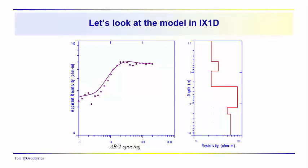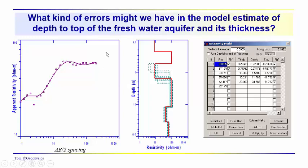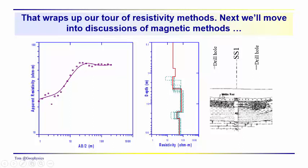Let's wrap up. We've taken a look at IX1D and we see that we have a lot of flexibility in what we can do with the program. The idea is to remain consistent with the geology — keep the bedrock down there where it should be. Don't lose sight of the fact that we do have adjacent drill hole data to help us constrain our model. You'll learn a lot by doing the one where you have a lot of control, seeing what kind of variability and limitations you might run into. I suggest that you download the program and give it a try. Thanks for joining us and we'll talk to you later.